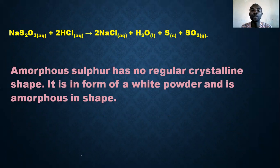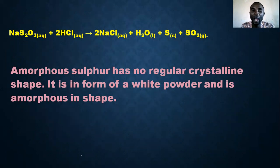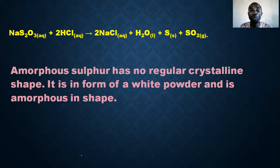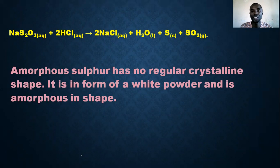Amorphous sulfur has no regular crystalline shape — that is why we call it amorphous. Anything described as amorphous does not have a regular crystalline structure; it is shapeless. It is in the form of a white powder. That is why we call it amorphous sulfur.